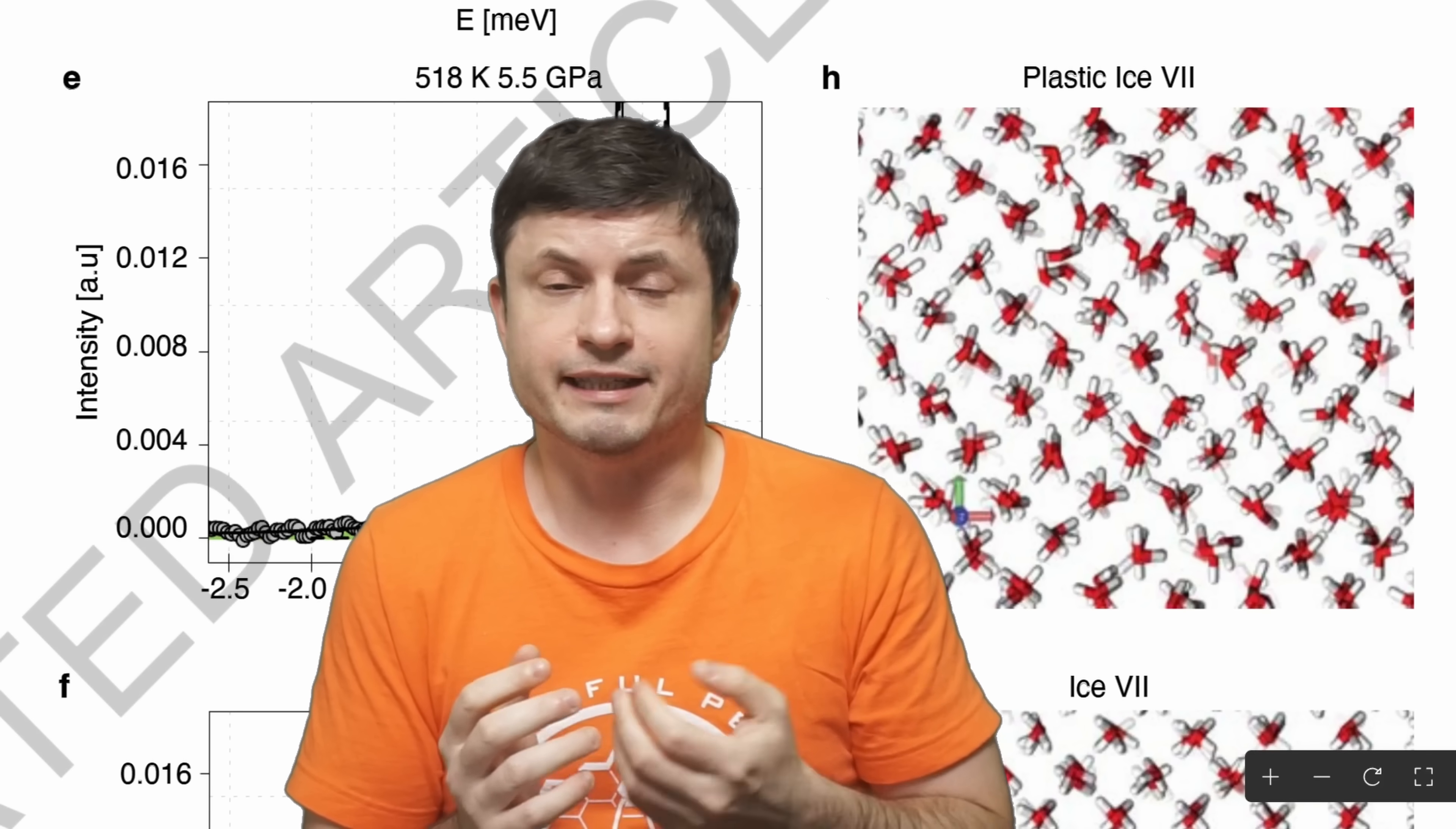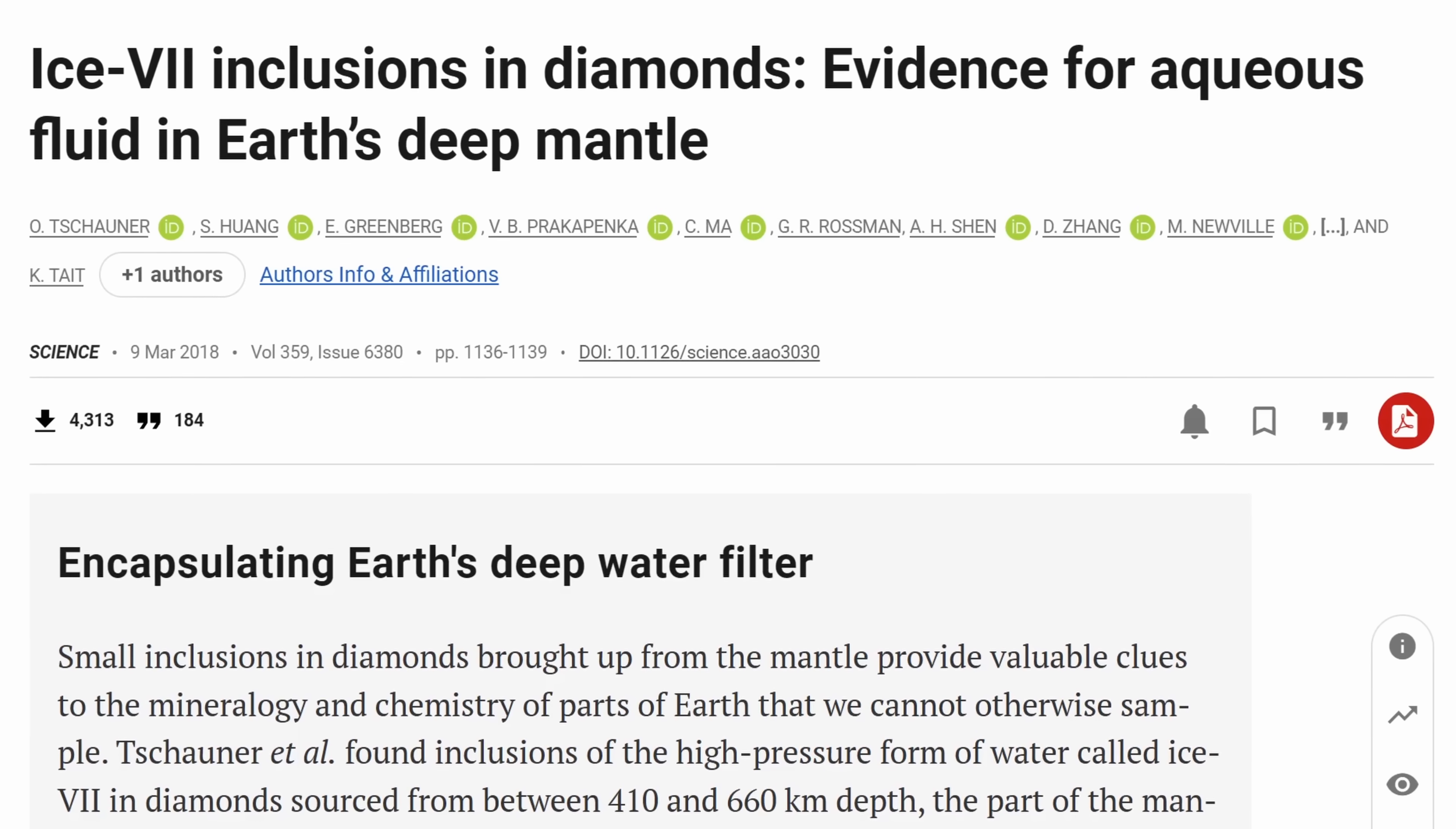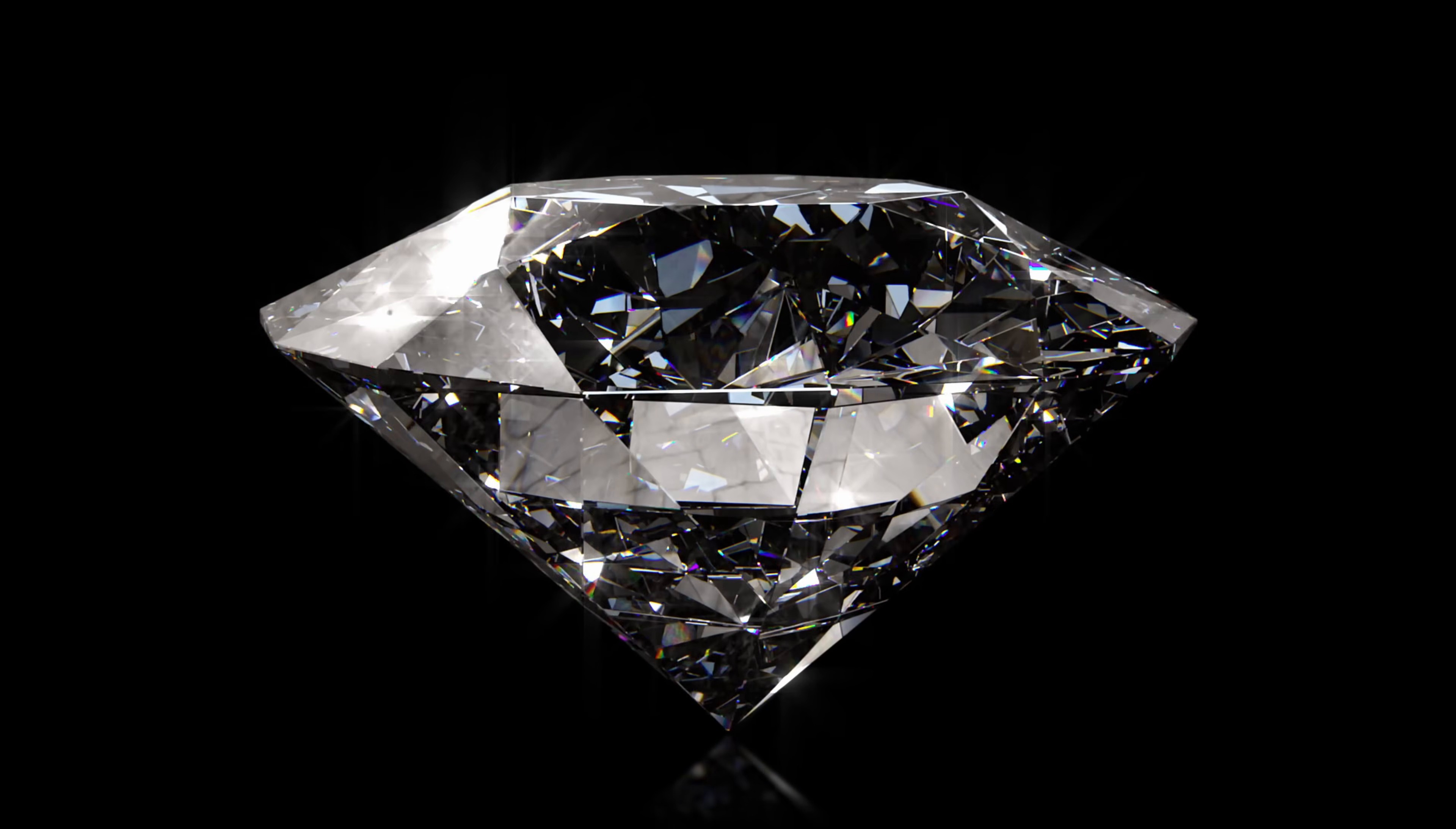Now, first of all, when it comes to Ice 7, the crystalline type, we know that traces of this ice even exist inside planet Earth. As a matter of fact, this study from 2018 definitively confirmed the existence of Ice 7 inside diamond samples that came from approximately 300 kilometers in depth, even explaining exactly how it forms and confirming the existence of this bizarre water ice inside our planet.